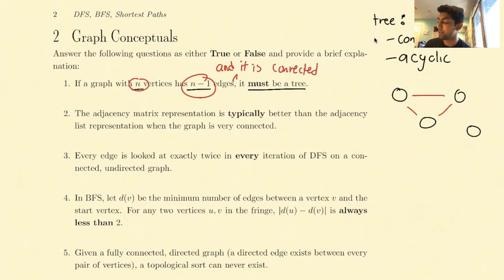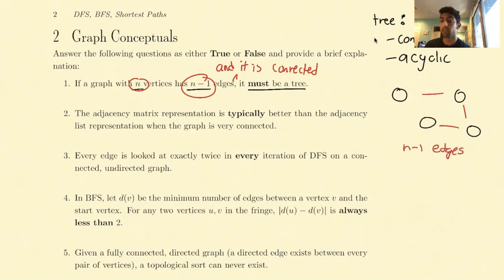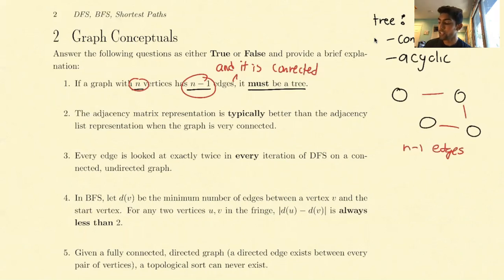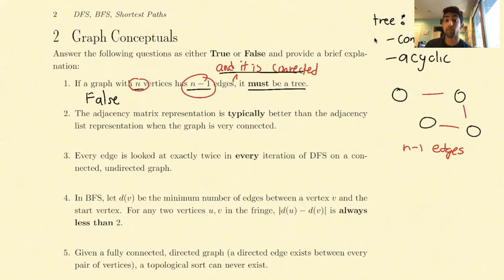Let's see why this claim makes it true. If a graph is fully connected, we see that it must have exactly n-1 edges if it doesn't have any cycles, because the first new edge we introduce will create a cycle. Another definition of a tree is that it has n-1 edges, where n is the number of vertices. This first question is false. The reason it's false is because we need to add the condition that it must be connected for us to know for a fact that this graph is a tree.